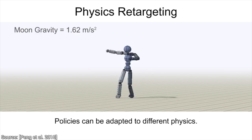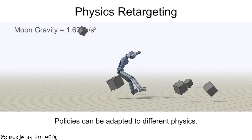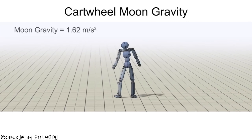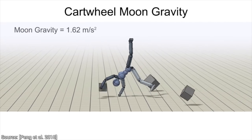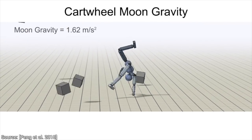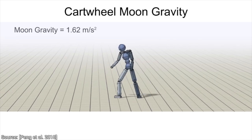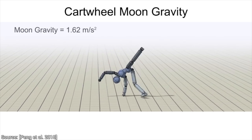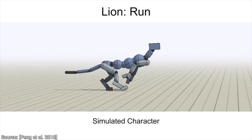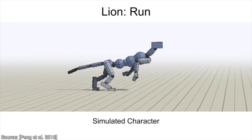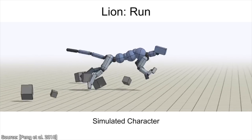It can even get used to the gravity of different virtual planets that we dream up. Bravo! The value proposition of this paper is completely out of this world: reference state initialization, early termination, retargeting to different body types and environments. To have digital applications like computer games use this would already be amazing, and just imagine what we could do if we could deploy these to real-world robots.